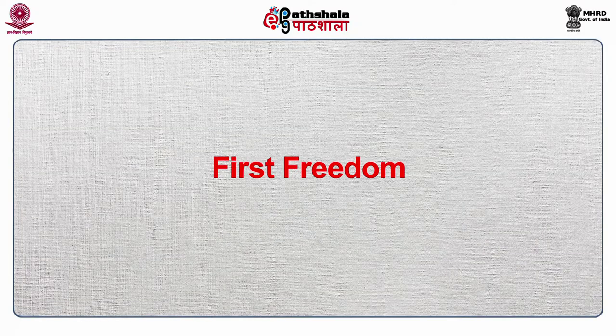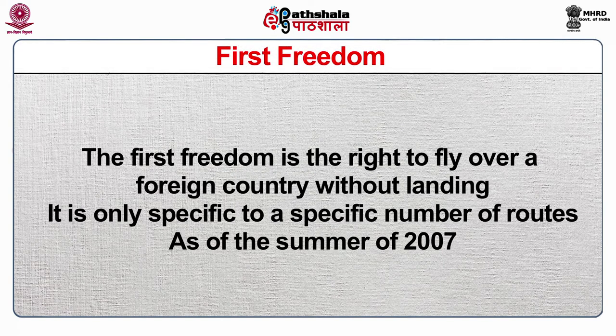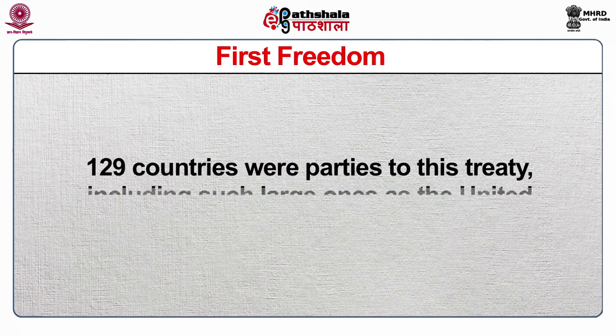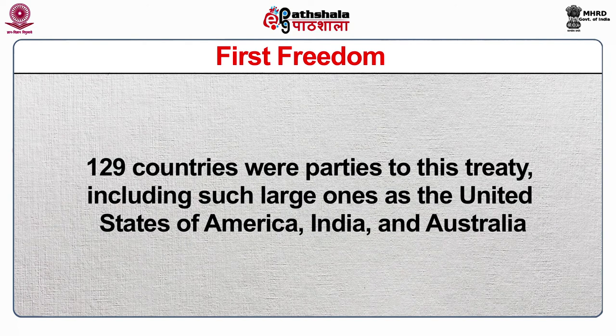The first freedom is the right to fly over a foreign country without landing. It is only specific to a specific number of routes. As of the summer of 2007, 129 countries were parties to this treaty including large ones such as the United States of America, India and Australia. However, Brazil, Russia and Indonesia were not. IASTA allows each member country to charge foreign airlines reasonable fees for using its airports, which is applicable presumably only to the second freedom.